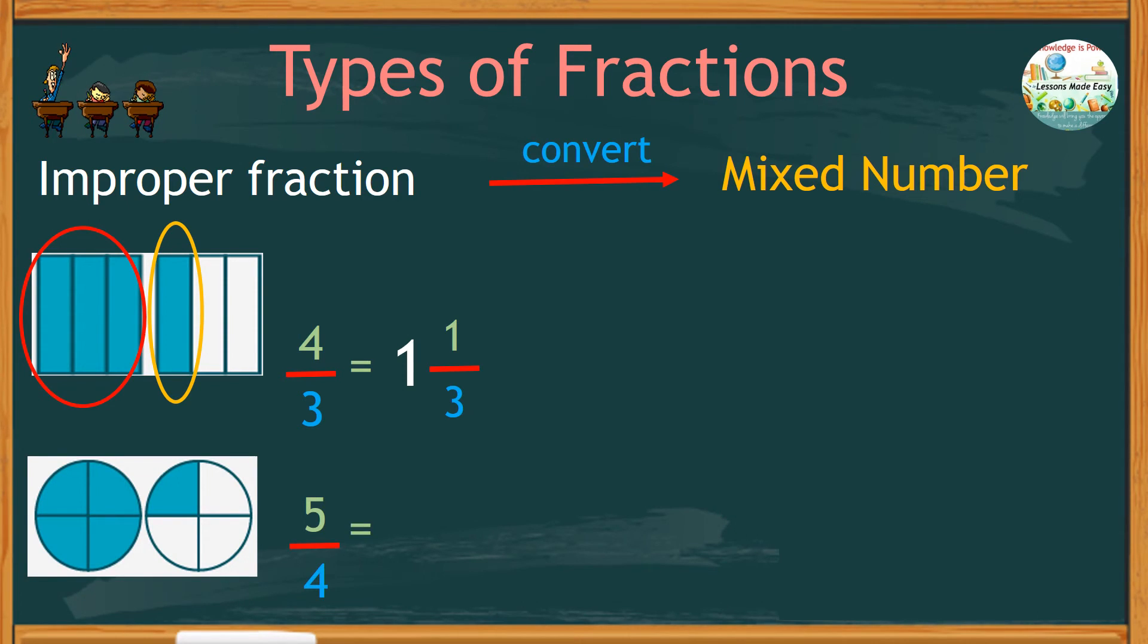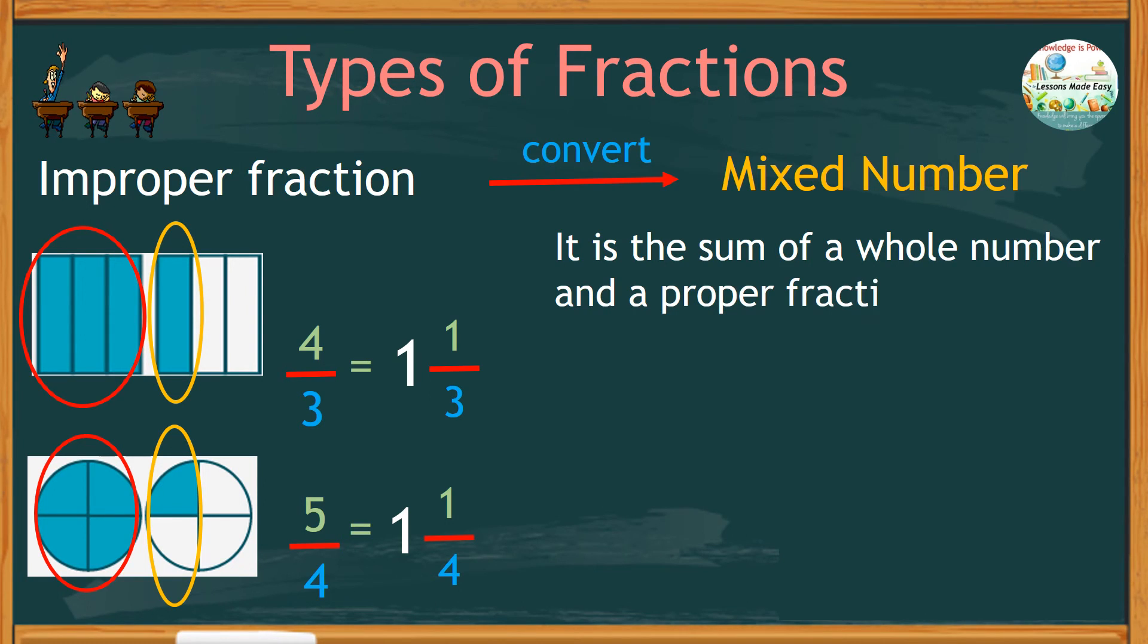It's the same as 1 whole plus 1 fourth. A mixed fraction, therefore, is the sum of a whole number and a proper fraction. It is easy to convert an improper fraction to a mixed number when there are pictures.